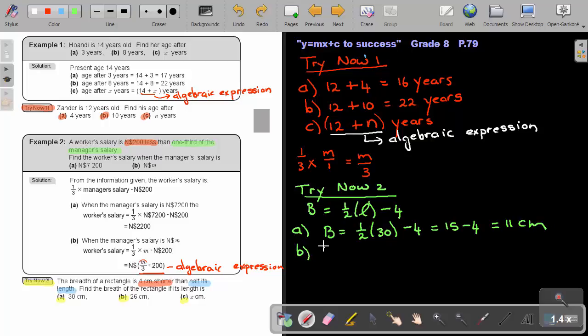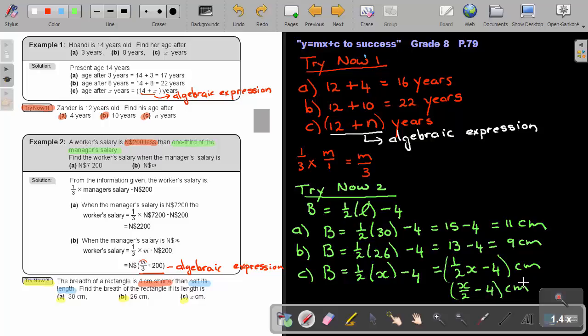Let's look at number B. Remember, the breadth is half the length. So it's half of 26, and again, subtract 4. So what will I get? I will get 13, half of 26, subtract 4, and I will get 9 centimeters will be the breadth. And now the final one, X. So again, let's just substitute in the place of the length, X, and we subtract 4. And basically, we can just leave it like this by saying half X minus 4, and put it in brackets, centimeters. You can also write this as X over 2 minus 4 centimeters. And remember, this is again an algebraic expression.